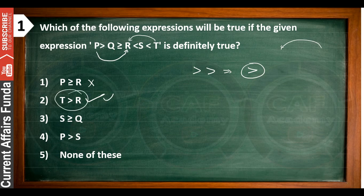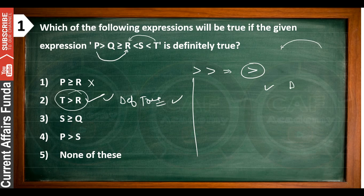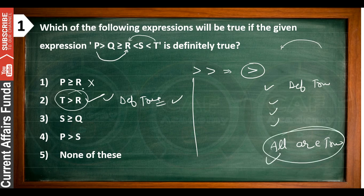So this is our concept — this is definitely true in this case. The rest we will not need to check, because one option says 'none of these.' If the first one is wrong and the second one is right, sometimes what happens — the first time you find 'definitely true.' So you check: if the first one is definitely true and all options are true, that is possible. But if the first one is wrong, then the second is definitely true, so we will not check further.